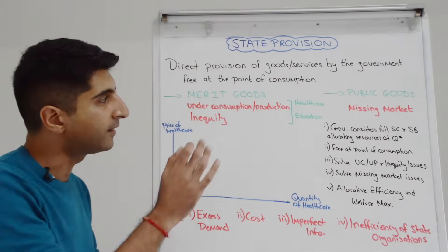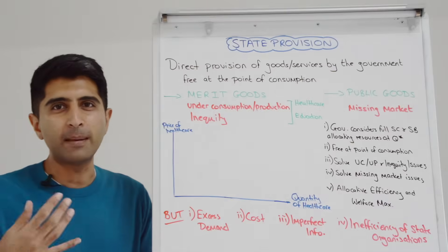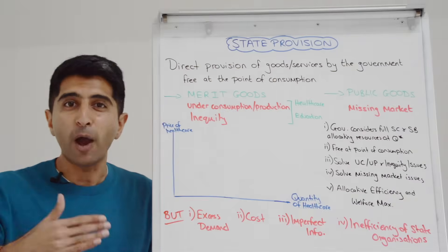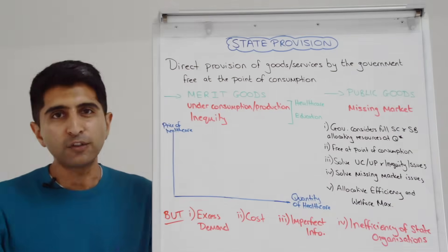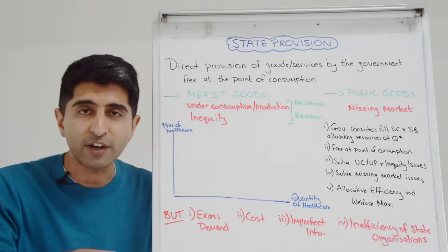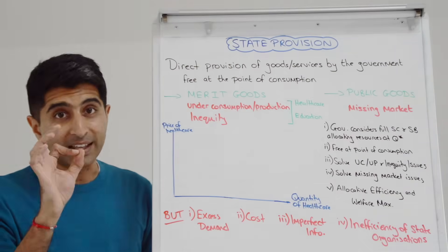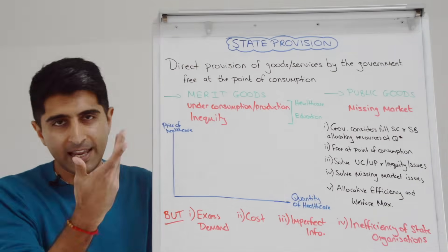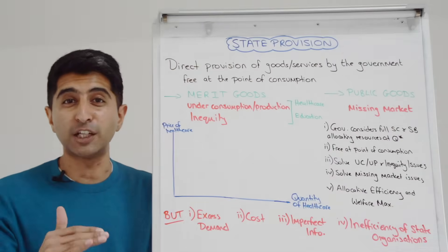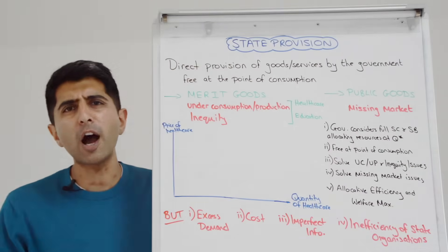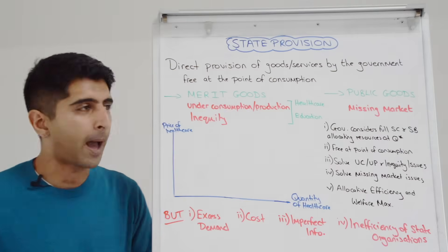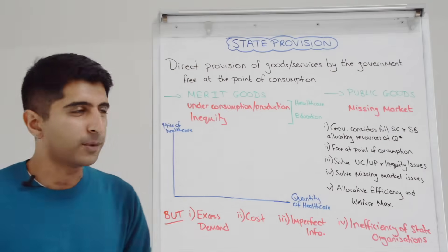Otherwise, you'll start talking about state provision of gyms or state provision of healthy foods, and that sounds a little over-the-top. So more than just this issue, you would also need to argue that left to the free market there is inequity — meaning unfairness — when it comes to key merit goods, in the sense that a price is being charged where you would argue maybe no price should be charged to exclude consumers from that market.